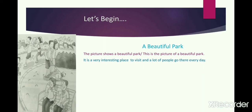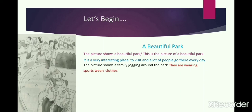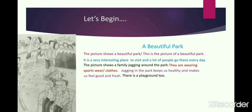Now let's move to our first question. My first question was: what is the family of son and parents doing? Here goes — 'The picture shows a family jogging around the park.' Another thing I observed was they are wearing sportswear or activewear. Then I come up with another general statement — I have picked up jogging from here, so I have written: 'Jogging in the park keeps us healthy and makes us feel good and fresh.' Again, one general statement added. Now moving back to the picture — there is a playground too. I have observed every minute detail. 'The children are playing on the swings and on the slides.' You remember my question about what the children on the top left were doing — the children are playing on the swing.